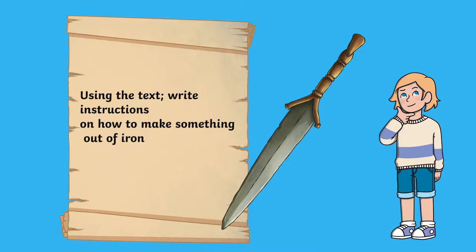Secondly, using the information from the text, why not have a go at doing a task related to what you've just read — such as writing instructions on how to make something out of iron. This helps improve children's recall and their ability to skim and scan.